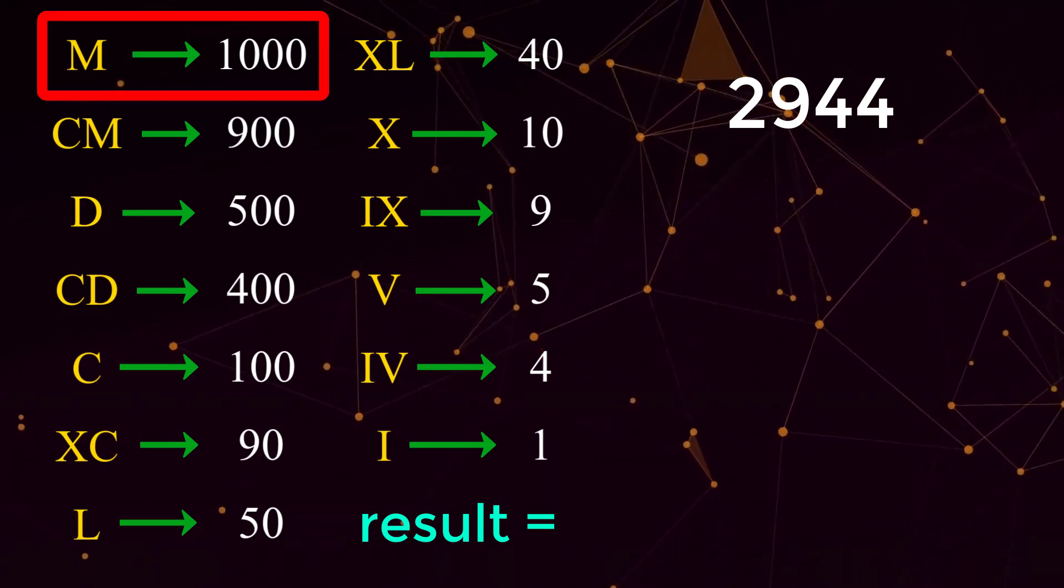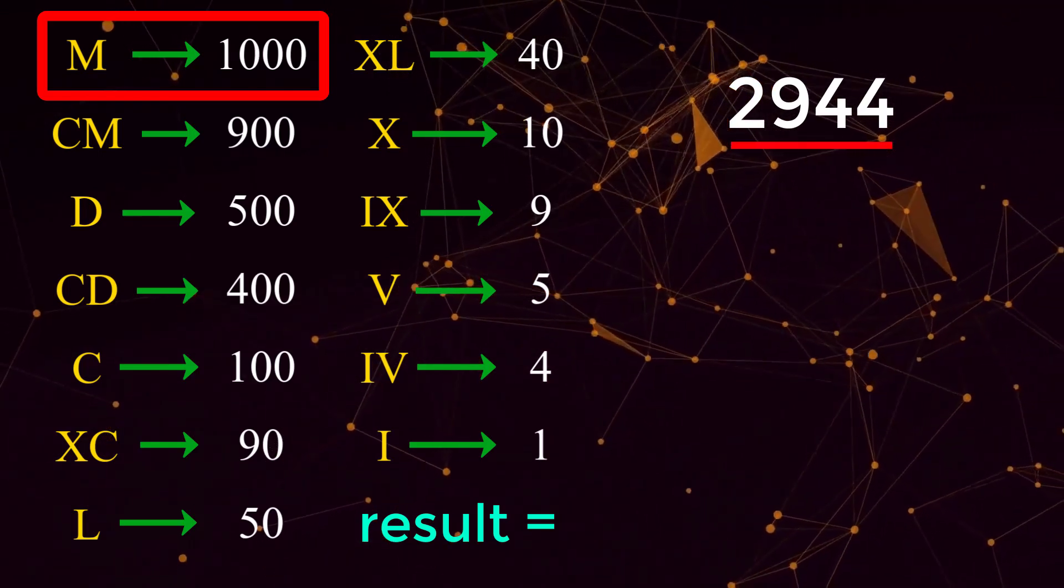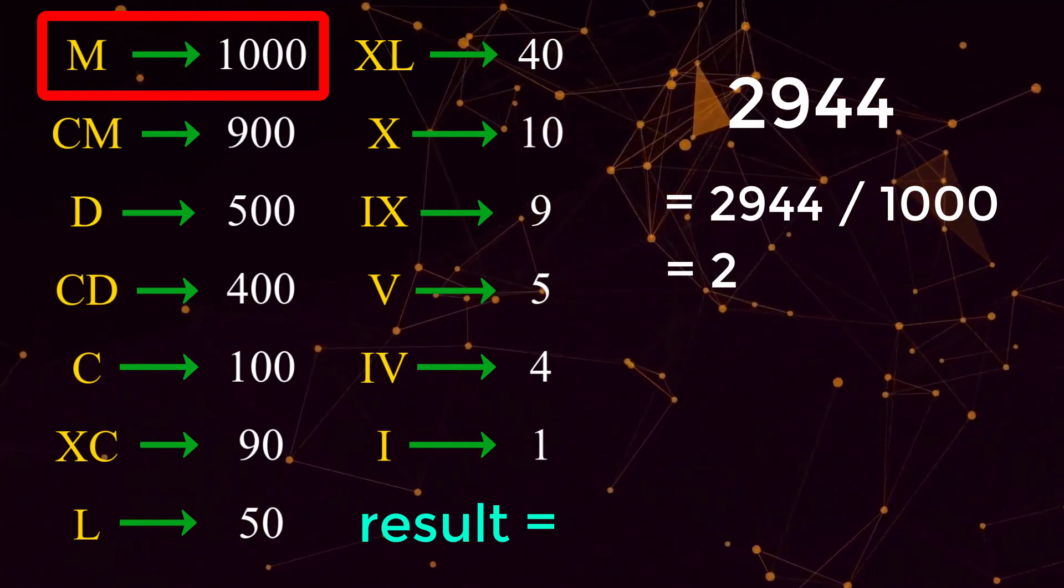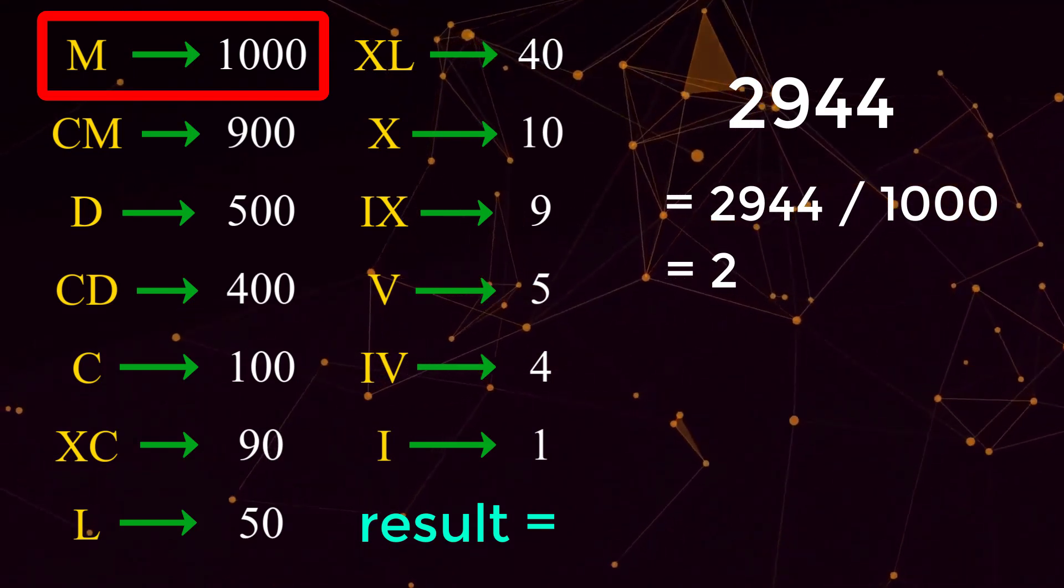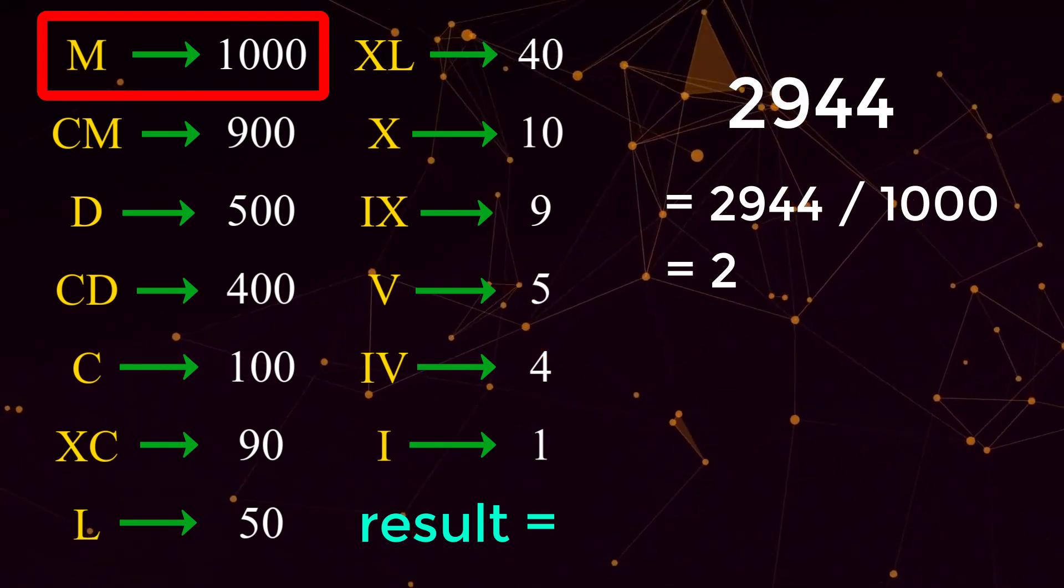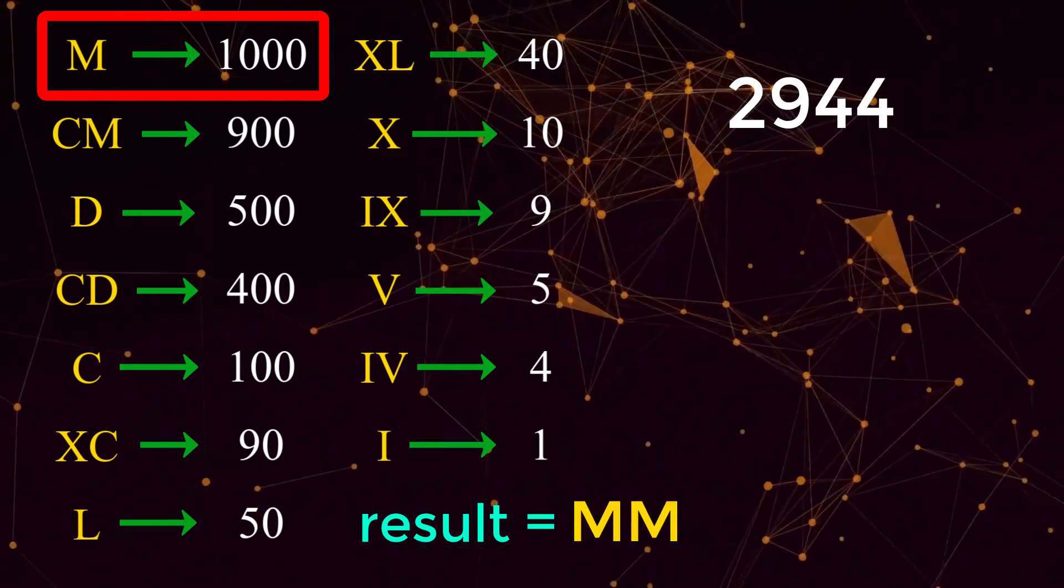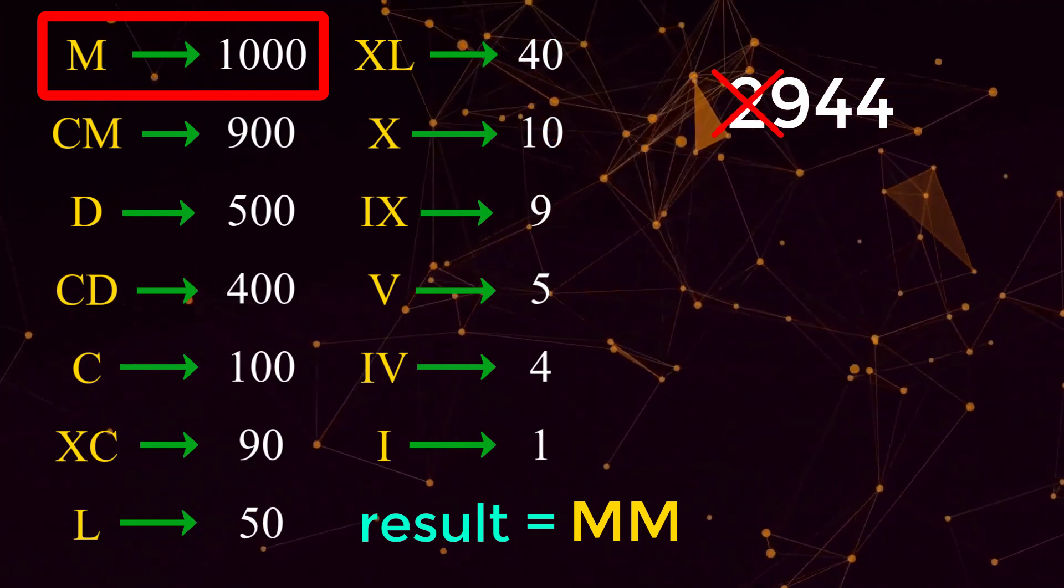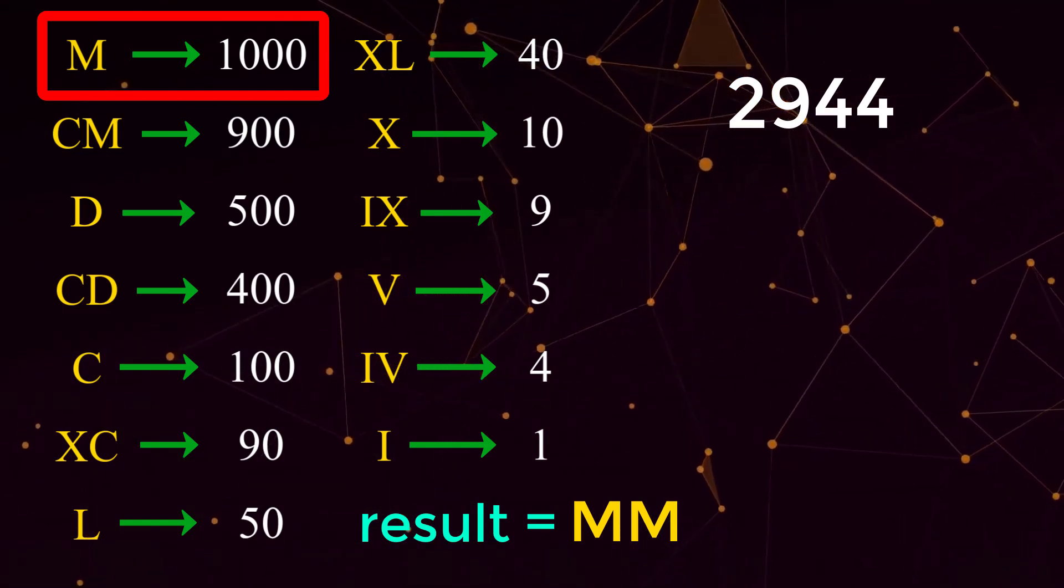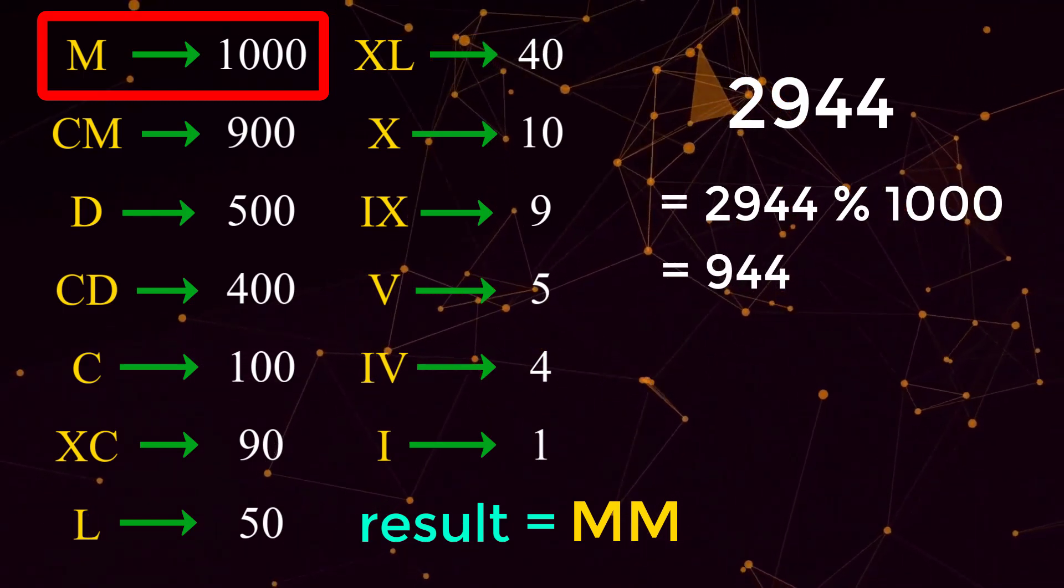So we're going to start with M which equals 1,000. If we take the current number which is 2,944 divided by 1,000 that would equal 2. And remember we are dividing by integers so the result will not be a decimal, it'll be a whole number. This number that we just calculated by doing the division tells us how many of that symbol we will need. So since we have a value of 2 that means we would need two M roman numerals to append to our result. Now we need to chop off the most significant digit from our number and we can do that using the modulus operator. So if we take our number 2,944 mod 1,000 we would be left with 944. And what this just did is we stripped off the 2.